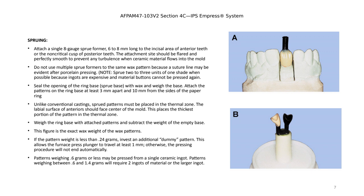When attaching the sprue — for both porcelain fused to metal and all ceramics — the sprue connection must be smooth all around. When making the connection between the crown and the sprue, make sure the wax is nice and smooth with no voids and the surface is free of any rough areas.